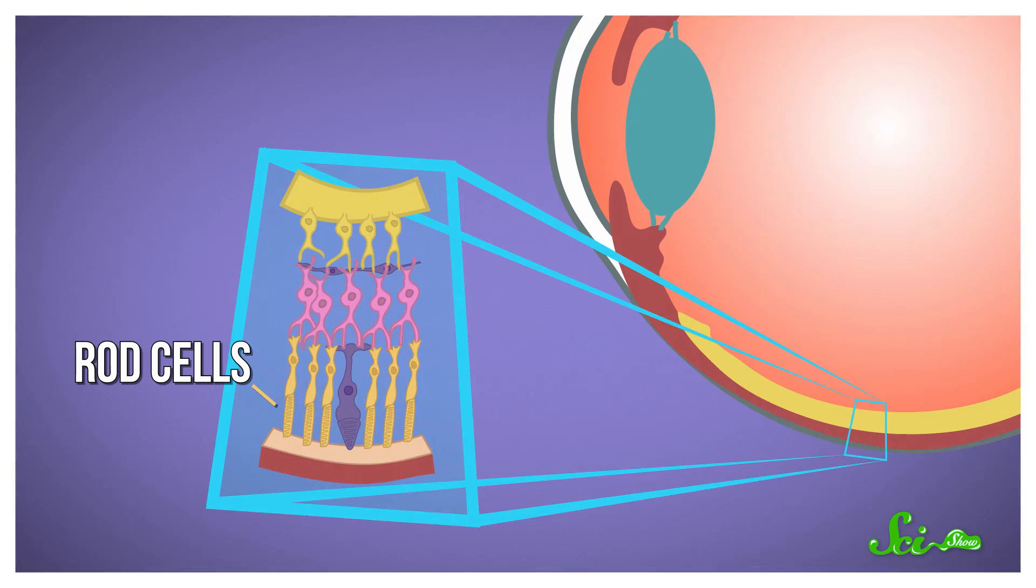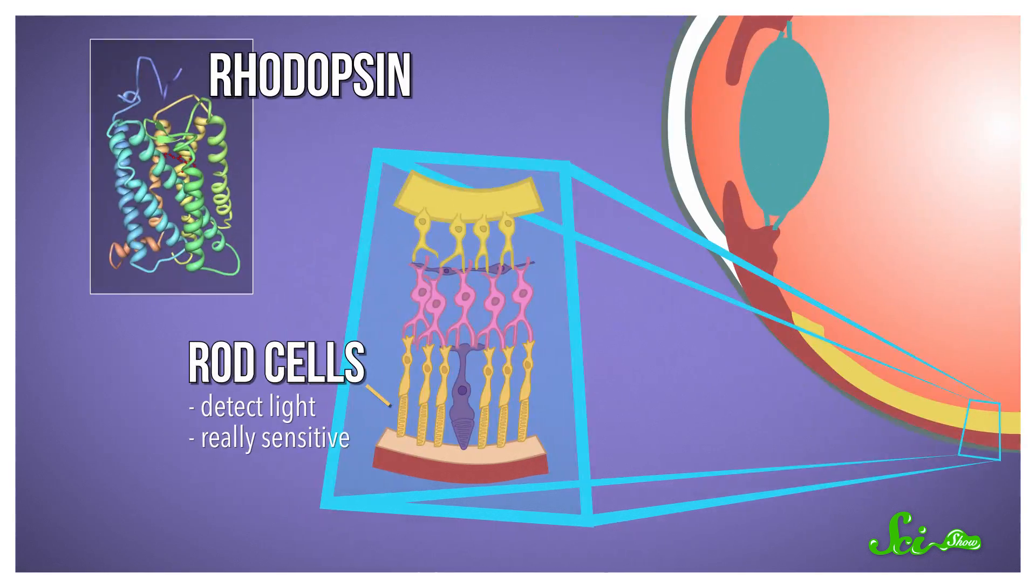That's because the rod cells in your retina, which detect light, are really sensitive. In fact, the rods have been known to respond to just a single photon of visible light. They work using a protein called rhodopsin. There's lots of rhodopsin in each rod cell, and when light hits rhodopsin, it changes form in a process called isomerization.